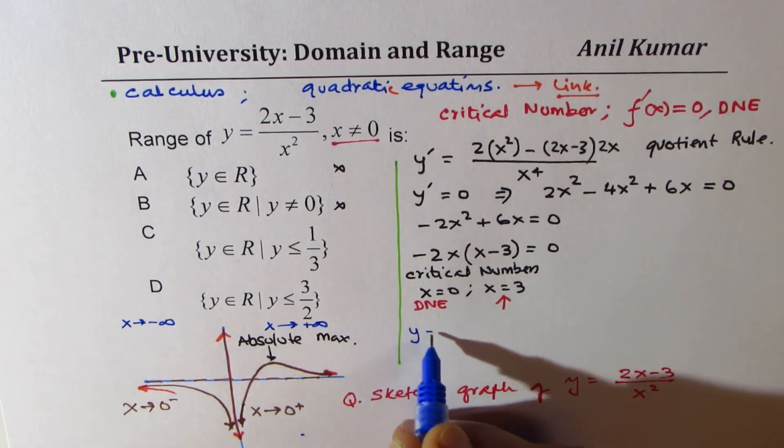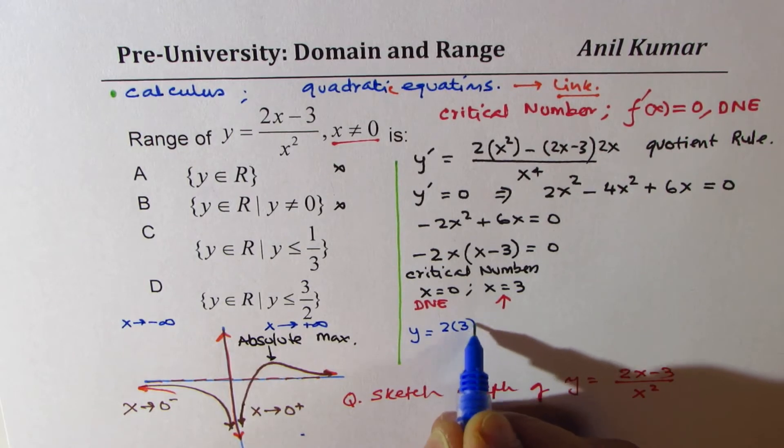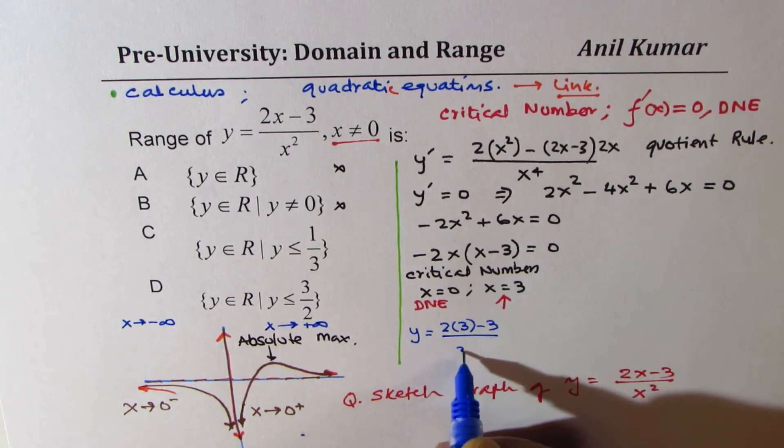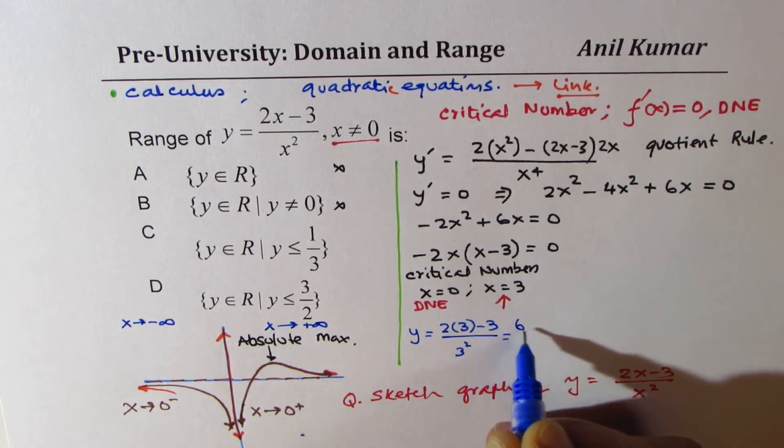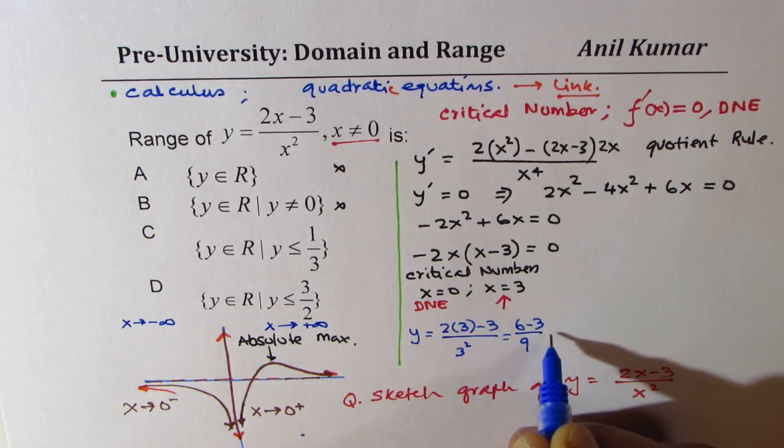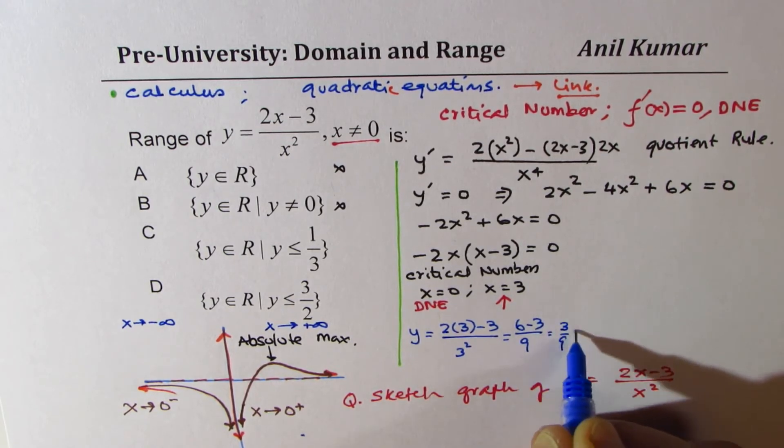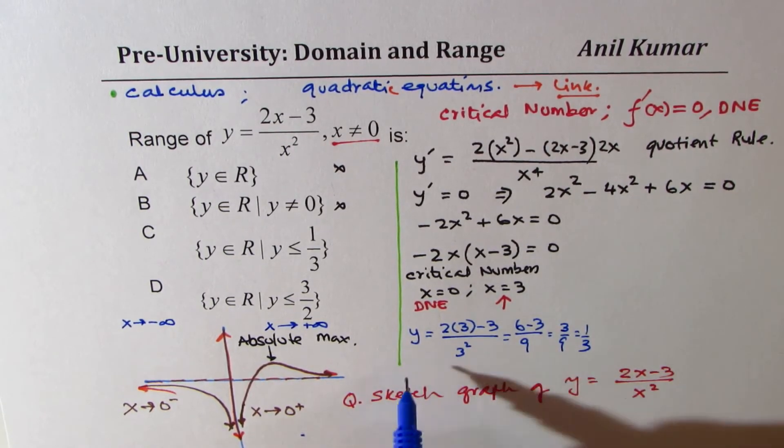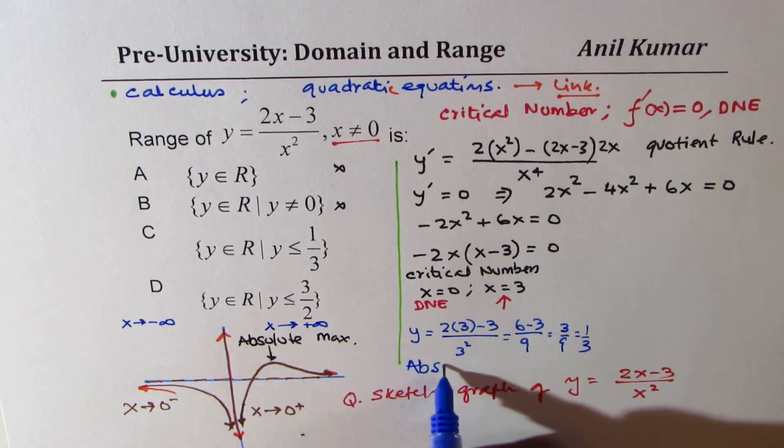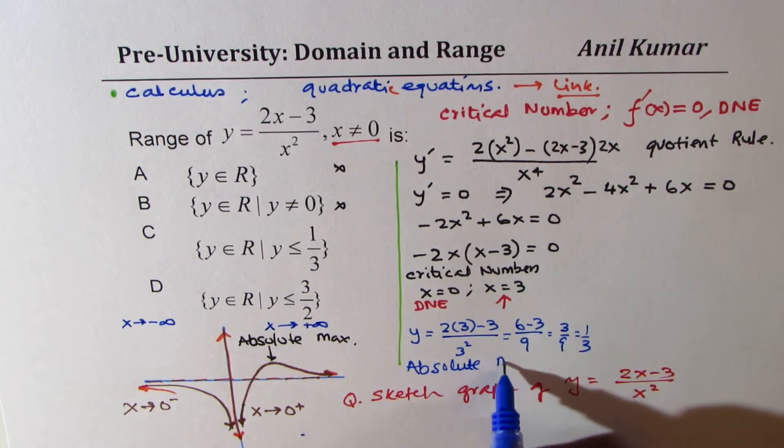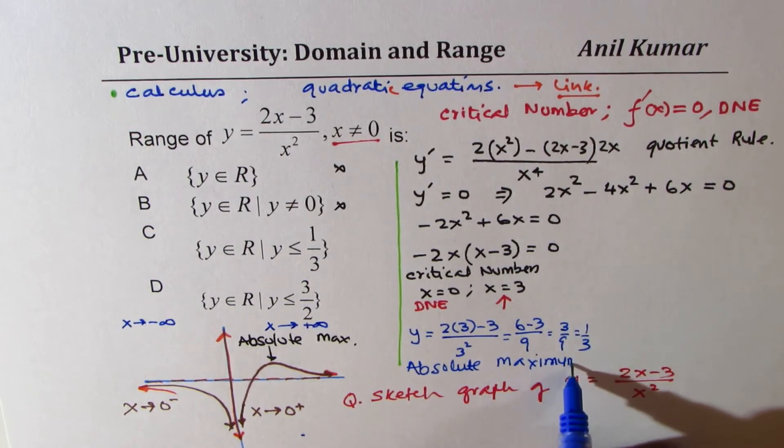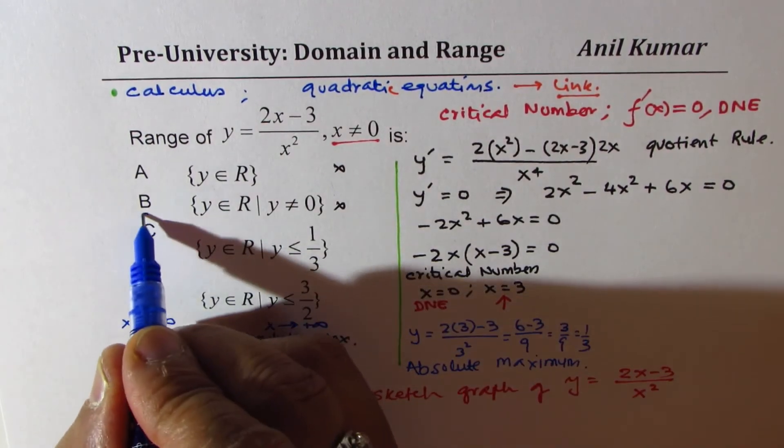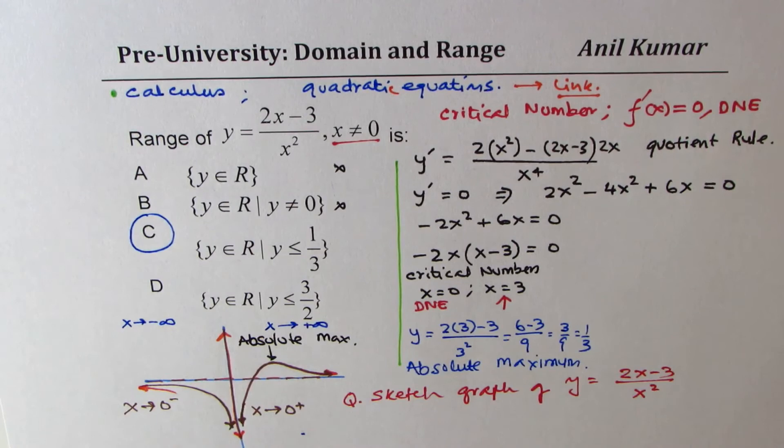Let's substitute 3 here. So y equals 2 times 3 minus 3 over 3 square, which is 6 minus 3 over 9, or 3 over 9, which is 1 over 3. So this is absolute maximum, which comes, which is our option C. Do you see that?